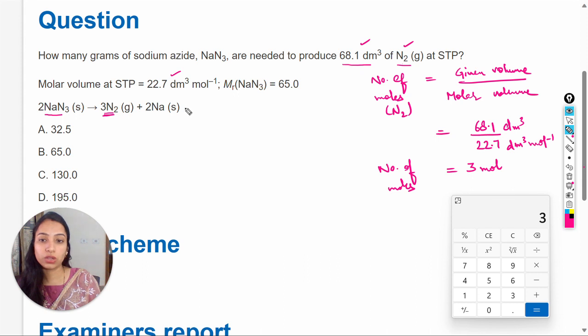According to the chemical equation, 2 moles of NaN3 produce 3 moles of N2 gas. Since we need 3 moles of N2, we require 2 moles of NaN3. However, the question asks for grams, not moles.